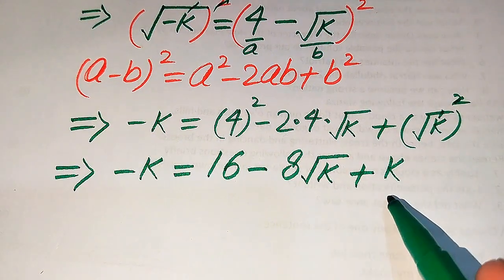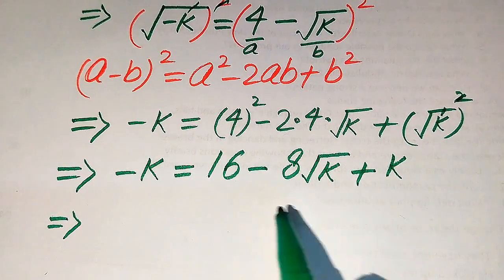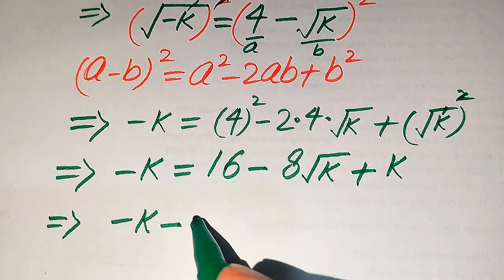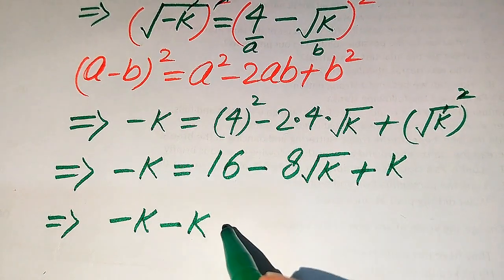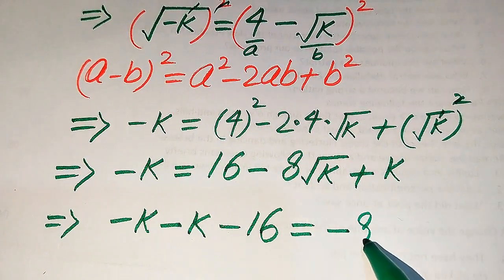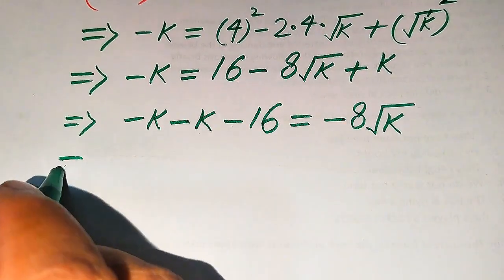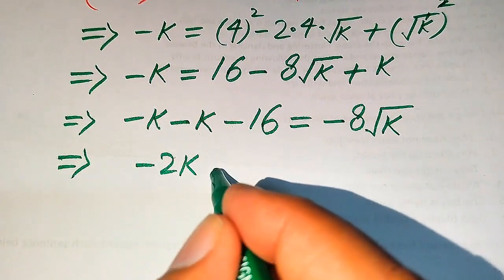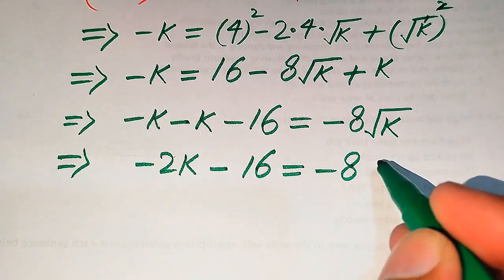Moving the positive k to the left hand side it becomes negative k, and moving 16 to the left hand side it becomes minus 16. So we get minus k minus k minus 16 equals minus 8 times square root of k, which simplifies to minus 2k minus 16 equals minus 8 times square root of k.